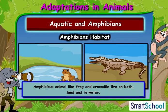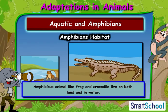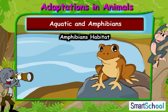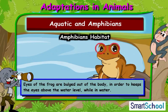There are some special types of animals called amphibious animals, like frogs and crocodiles, that live both on land and in water. Let us understand how a frog adapts to its habitat. A frog's long sticky tongue helps it to catch prey easily. Similarly, its eyes are bulged out of the body in order to keep them above the water level while in water.